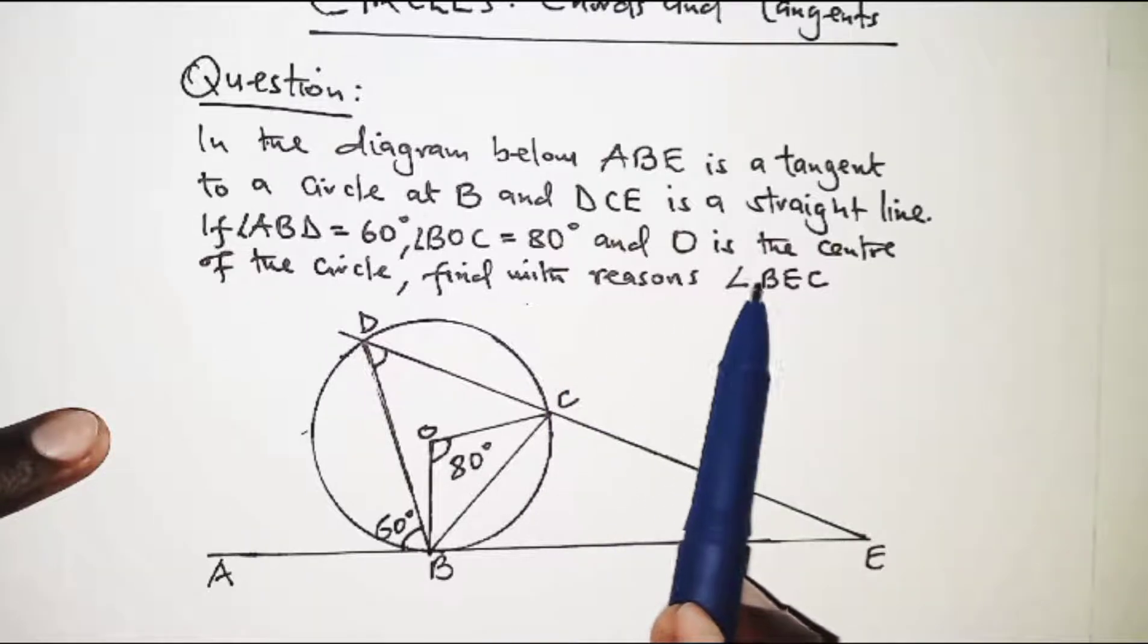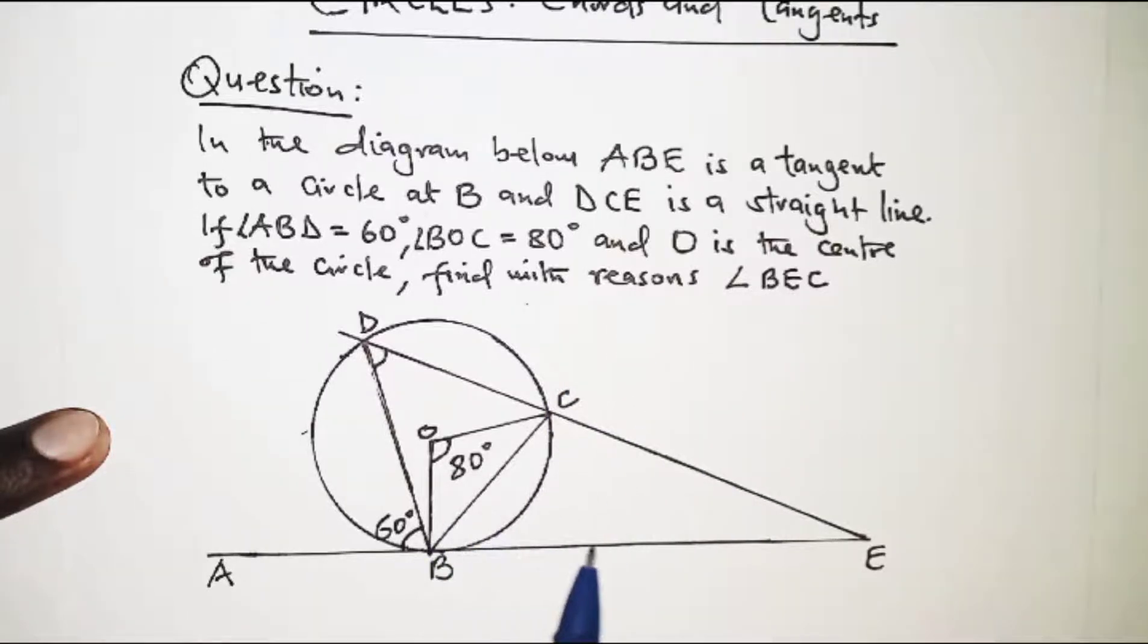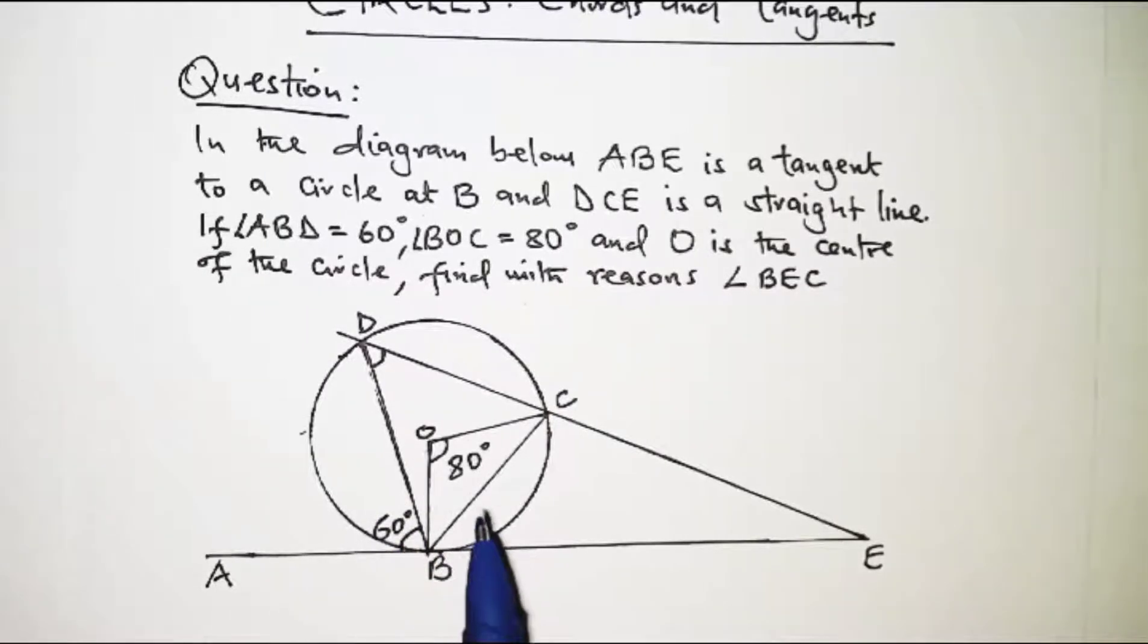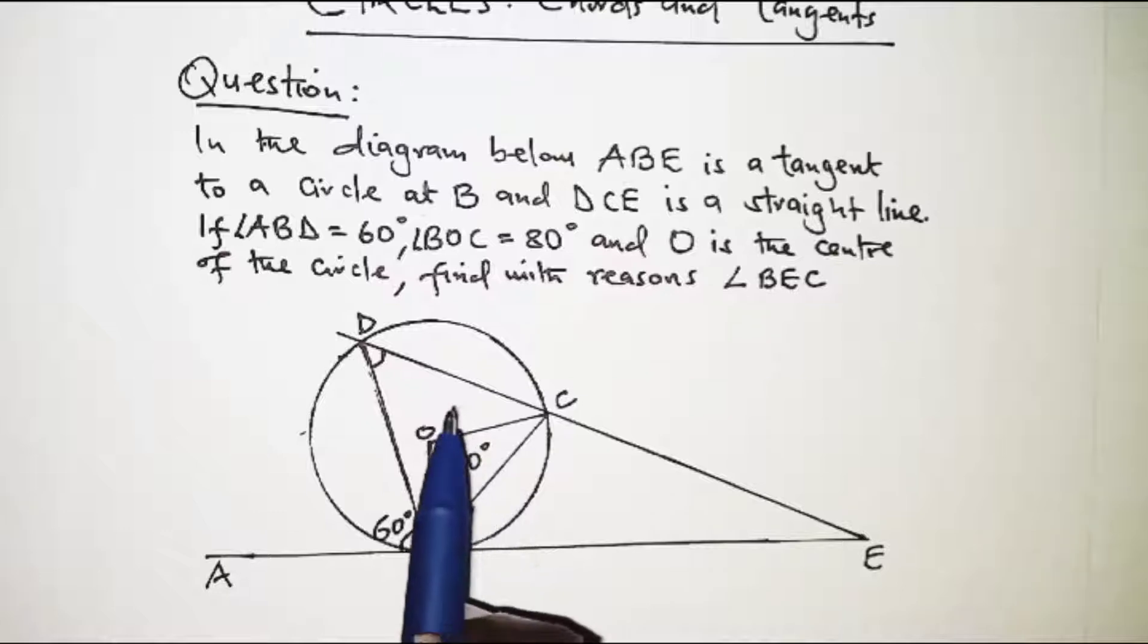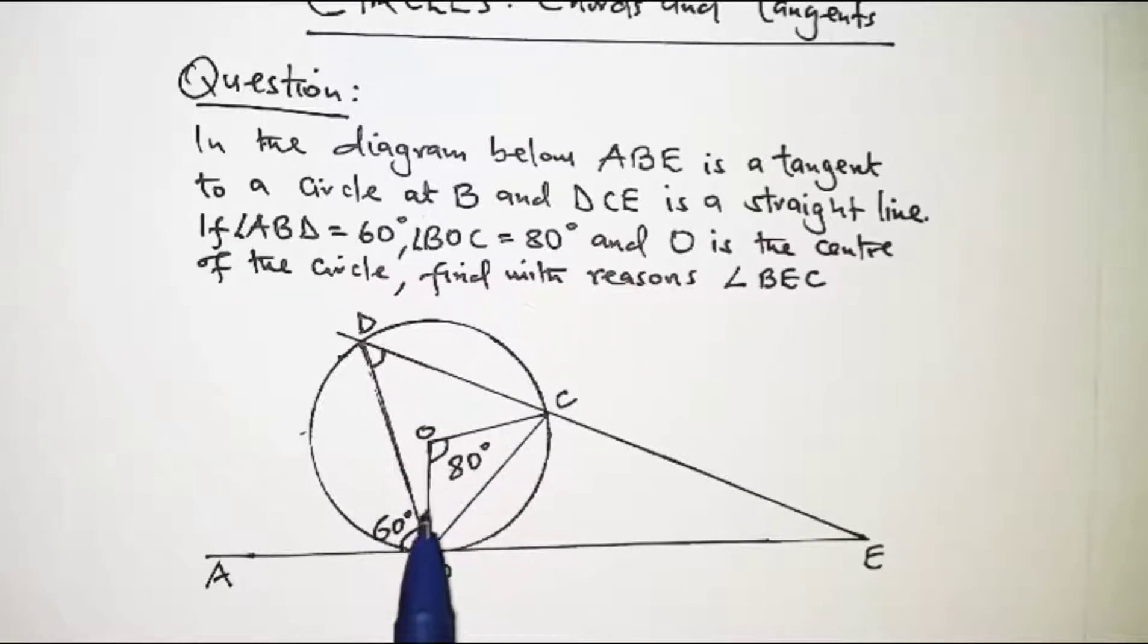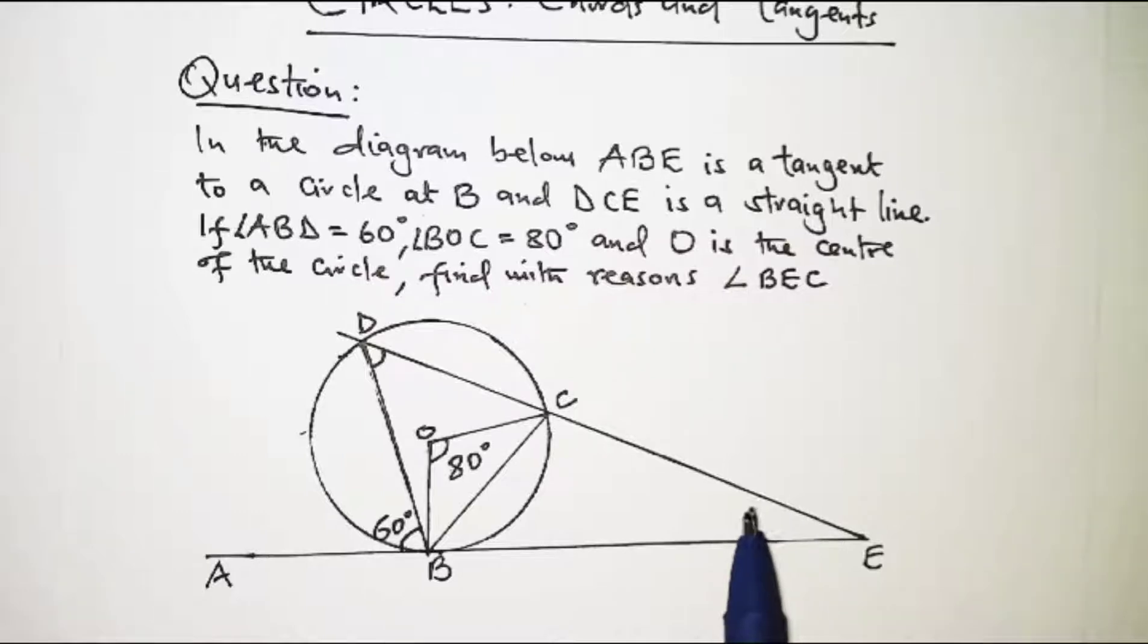Find with reasons angle BEC, so the angle BEC at this particular point. What you're going to do is fill in the missing angles, and then automatically angle E will come.